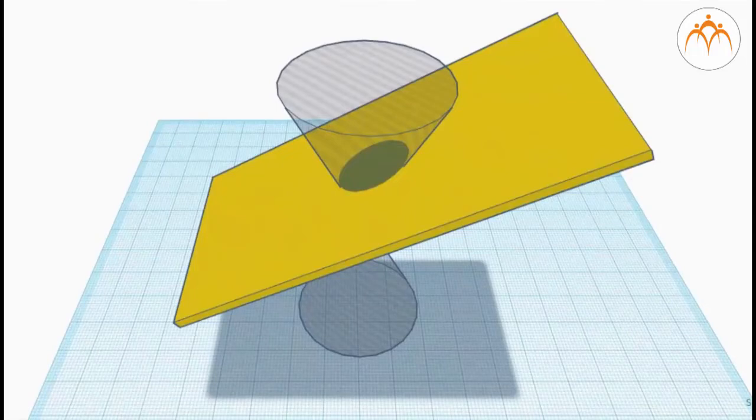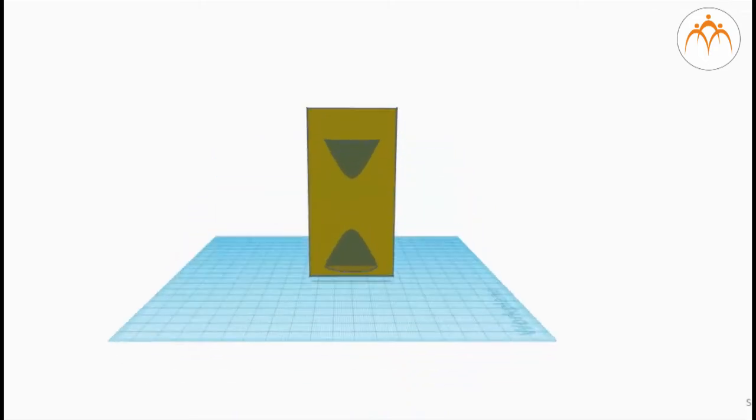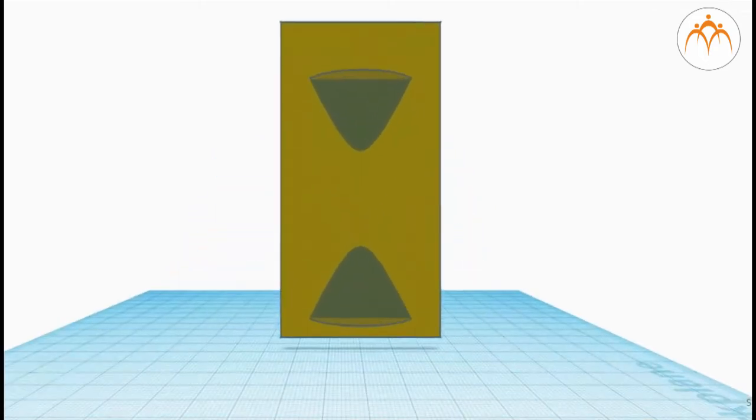છેદ લંબ વરતુળ કમી એલ્પ્સ આની મક ચવથા તેચા મધે આસ્તો તો મણી જે પરાસ્ત કેવા હઈપર બુલા તર હે